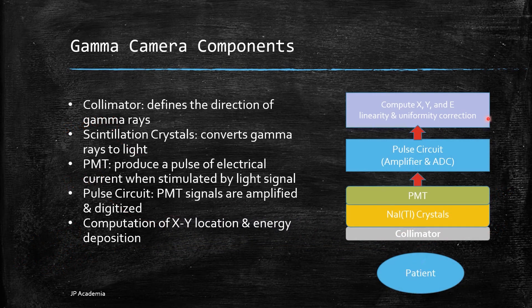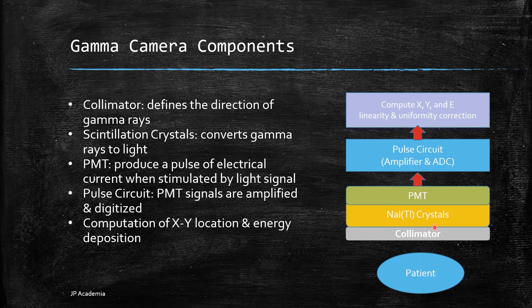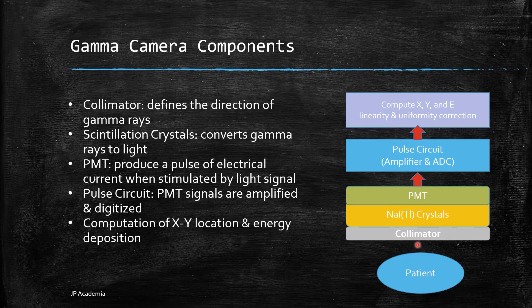So, I have this illustration. The patient will release gamma rays, and the first layer here is the collimator. The collimator is composed of a lead plate with large number of holes. It controls which gamma rays are accepted and it defines the direction of gamma rays. This will produce a gamma distribution projected to the scintillation crystals.